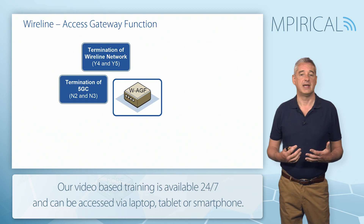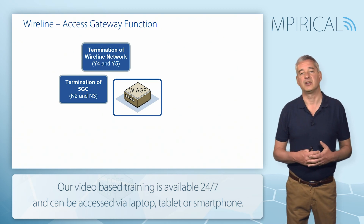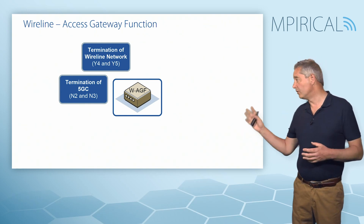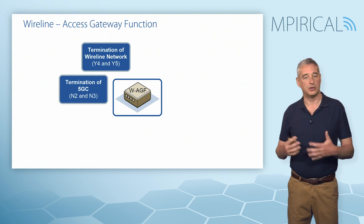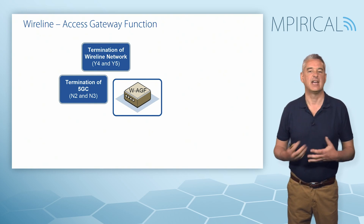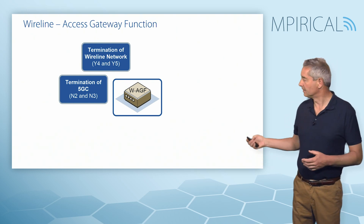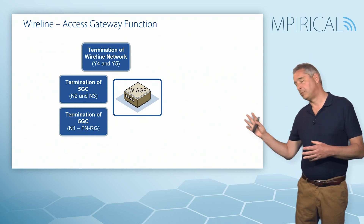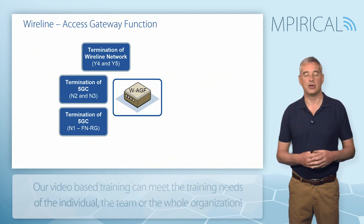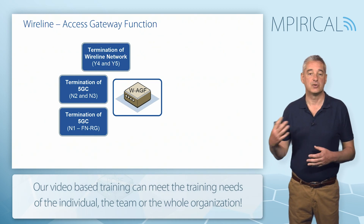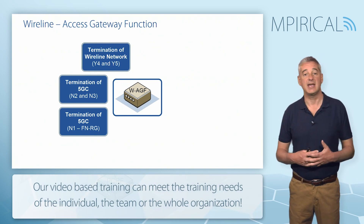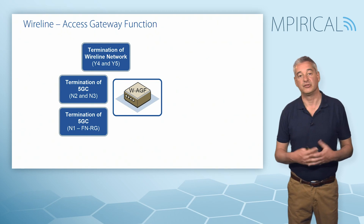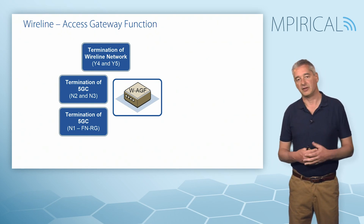The WAGF must also terminate the standard 3GPP-based connections: N2 towards the AMF using the NGAP protocol, and in the case of the user plane, N3 towards the UPF using the GTPU protocol. In the case of the Fixed Network Residential Gateway, it must also terminate N1 — the NAS signaling — which must be mapped onto the proprietary broadband or cable signaling protocols down to the Fixed Network Residential Gateway.